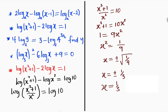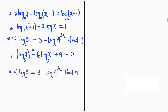Now let us move on to problem number 3, which says that log y to base 2 is equal to 3 minus log of 4 to the power of 3/2 base 2, and we are asked to find the value of y. What we are going to do is first simplify the right-hand side, then relate the left and right-hand sides to obtain the value of y. So let us begin with the solution.